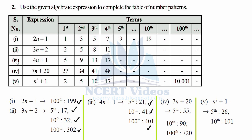For the fourth expression 7n + 20, we need the 5th, 10th, and 100th terms. For the 5th term: 7×5 + 20 = 35 + 20 = 55. For the 10th term: 7×10 + 20 = 70 + 20 = 90. For the 100th term: 7×100 + 20 = 700 + 20 = 720.